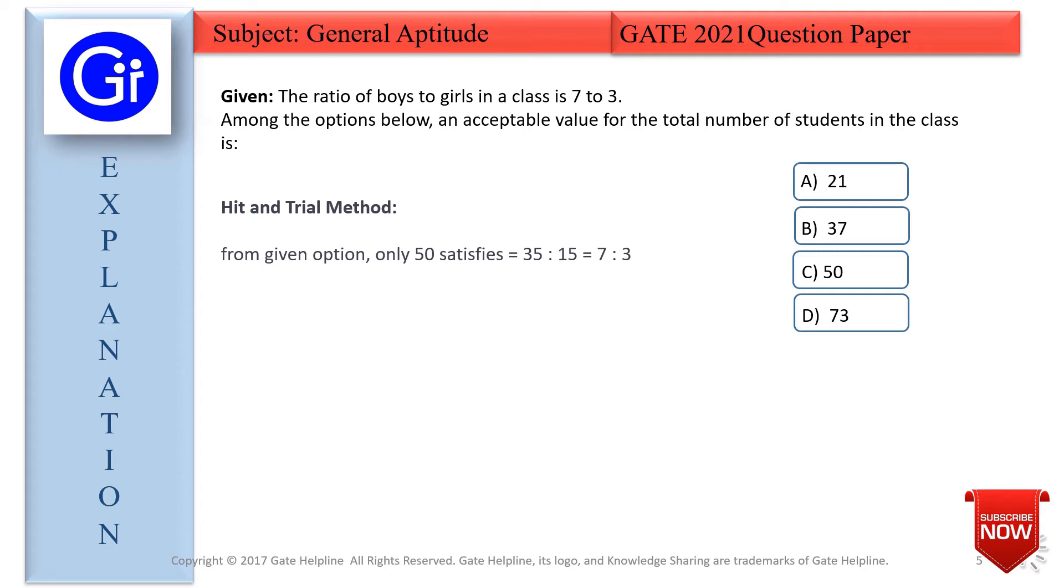If you multiply 2 on both sides: 14 + 6 = 20. So 21 won't be the answer. Option A is rejected. Next is 3: 7 × 3 = 21, and 3 × 3 = 9.